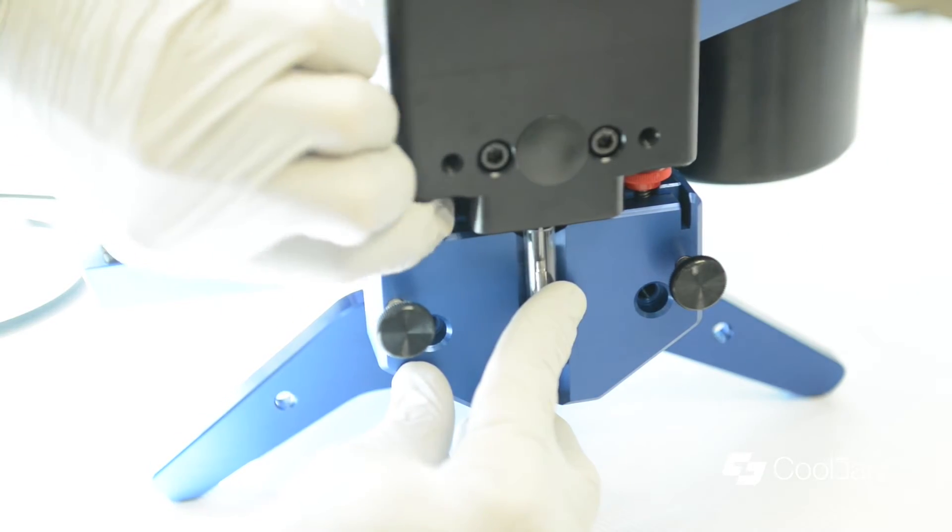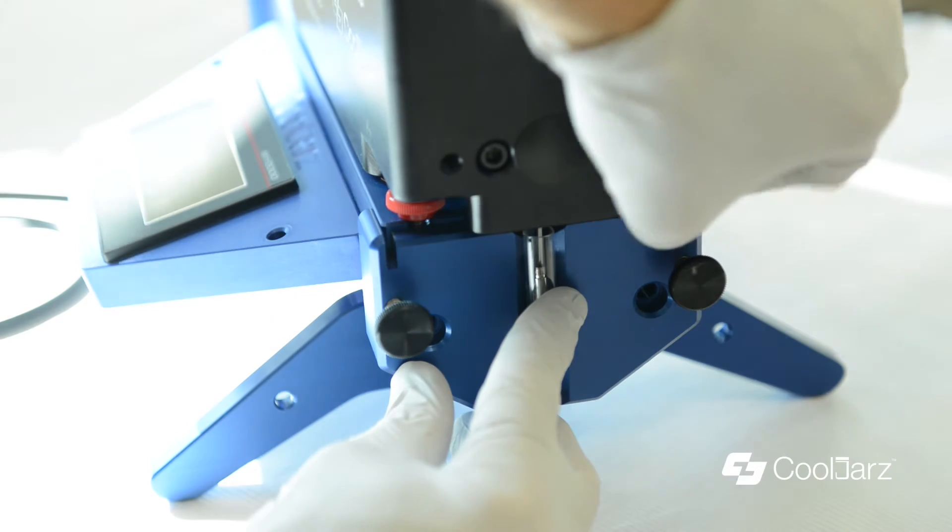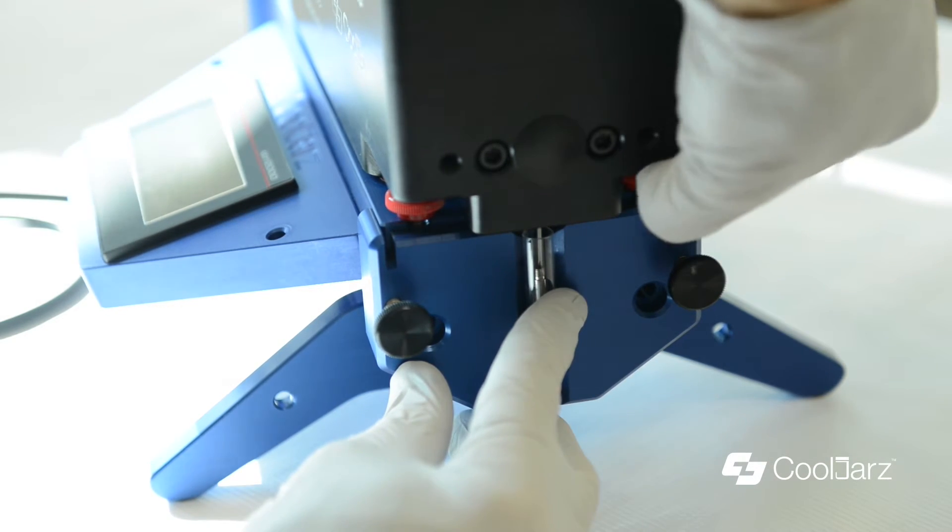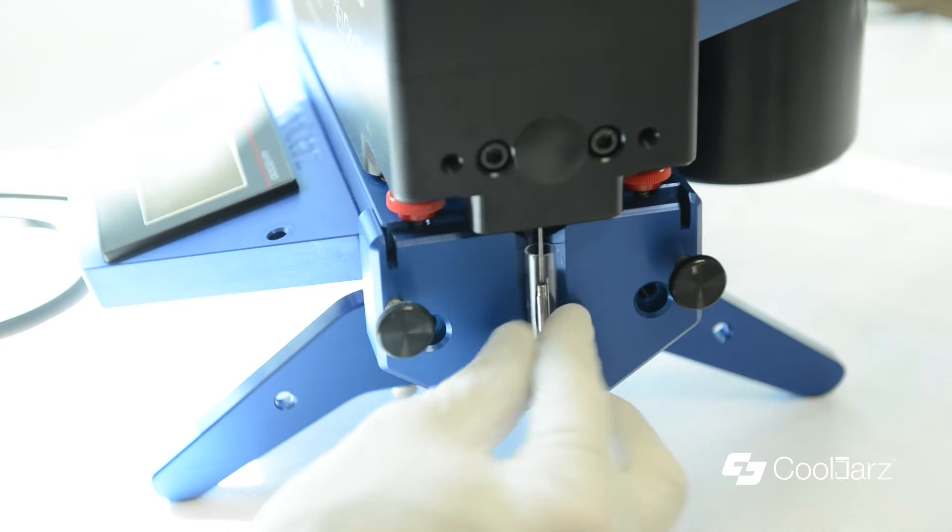Once you've got it lined up, tighten up your two thumb screws. Just finger tight and that will line up your cart.